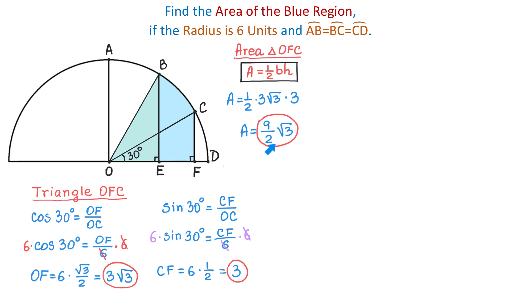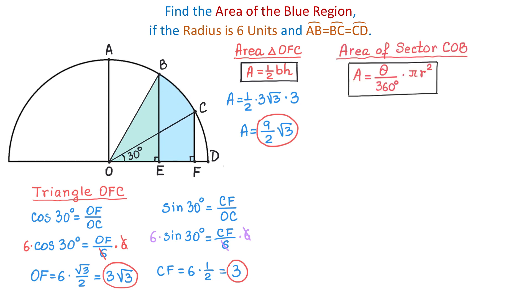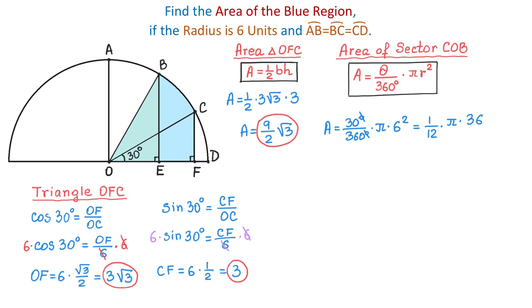Next we need to find the area of sector COB. The formula for the area of a sector is theta over 360 degrees multiplied by pi r squared. Here theta is 30 degrees and the radius is 6 units. So the area is 30 over 360 times pi times 6 squared. Simplifying, 30 over 360 reduces to 1 over 12, and 6 squared is 36. Then 36 divided by 12 is 3, so the area of the sector is 3 pi.